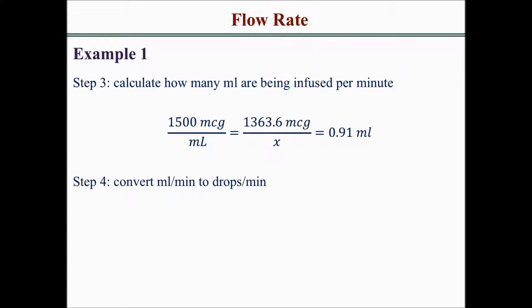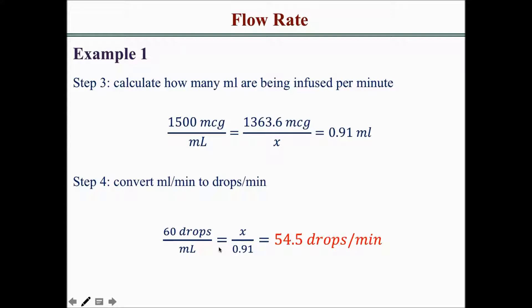Then you want to convert the mLs to drops. Since 60 drops are in every mL, you need to know how many drops are in 0.91 mL. When you set up the proportion and cross-multiply, that gives you the answer: 54.5 drops per minute. So every minute the patient is receiving 54.5 drops of the dopamine solution.